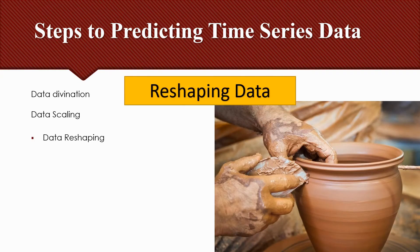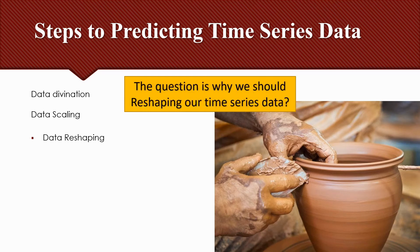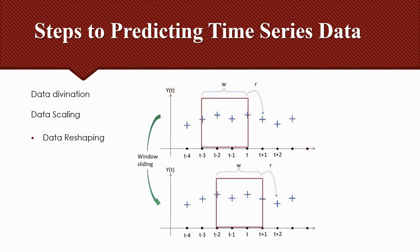Machine learning methods like deep learning normally can't be used directly for time-series forecasting. Before machine learning can be used, time-series data must be reframed as a suitable supervised learning problem. In other words, the data should be in an input and output format. We can do this by using previous time steps as input variables and using the next time step as the output variable. This preparation technique is called the sliding window method.